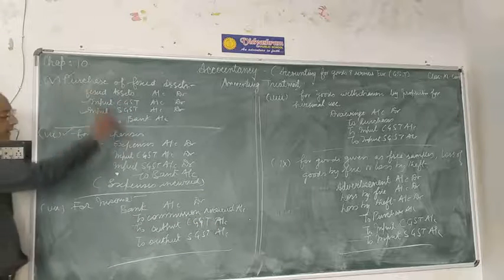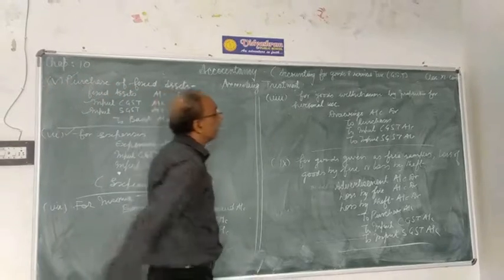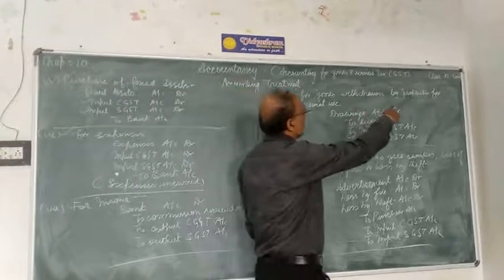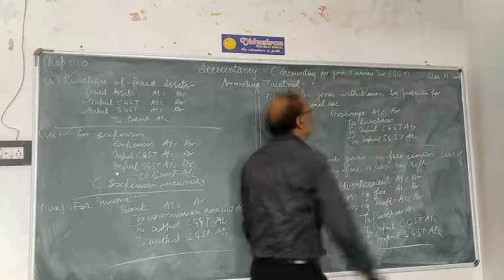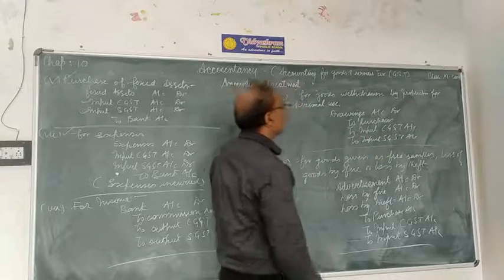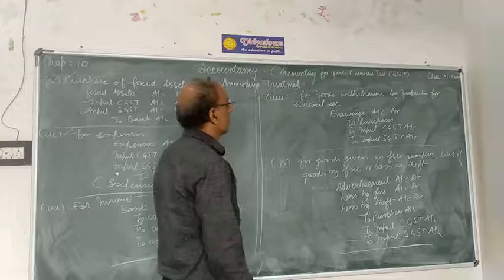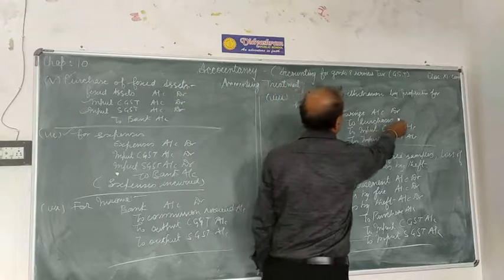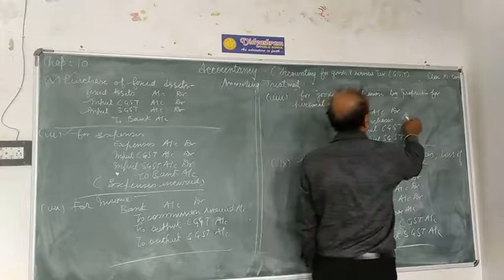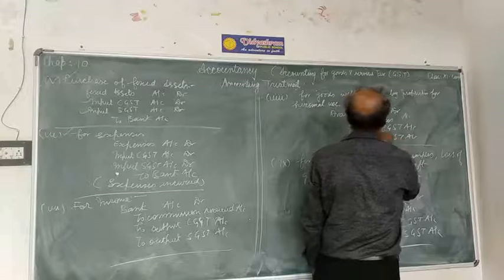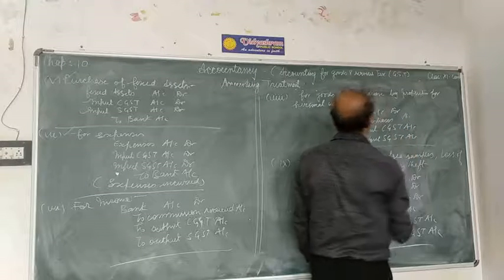Now the 8th entry: goods drawn by the proprietor for personal use. Drawing account is debited to purchase account, and to input CGST and input SGST.